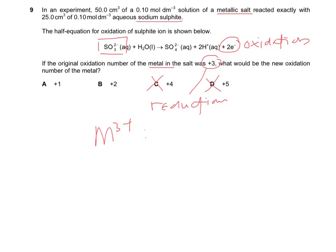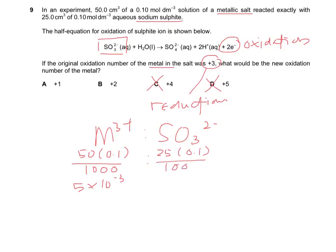Based on the calculation here, we can have SO₃²⁻ and M³⁺. With 50 cm³ and 0.1 mol per dm³ of M³⁺, you have 5×10⁻³ mols of M³⁺. And for sulphide, with 25 cm³ and 0.1 mol per dm³, after the calculation you will have 2.5×10⁻³ mols of SO₃²⁻.